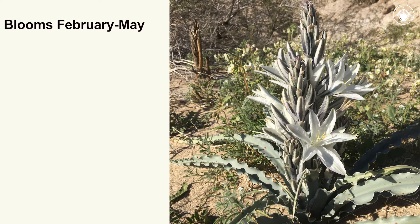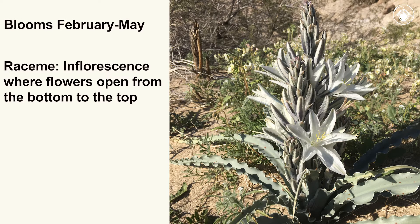The Desert Lily blooms from February to May. The flowers are arranged in a raceme, which is a type of inflorescence, or array of flowers, in which the flowers open indeterminately from the bottom to the top.